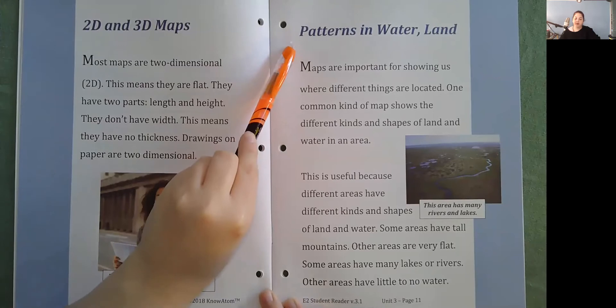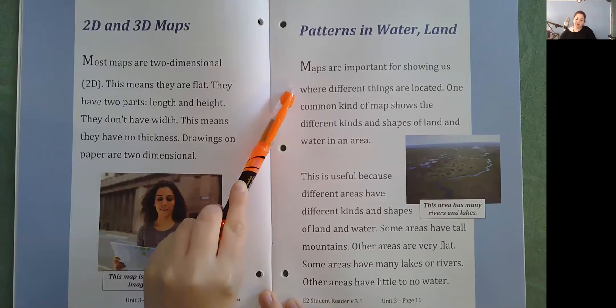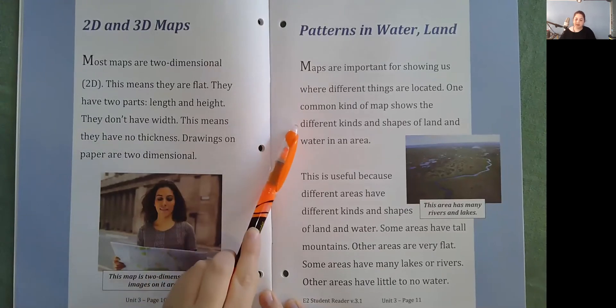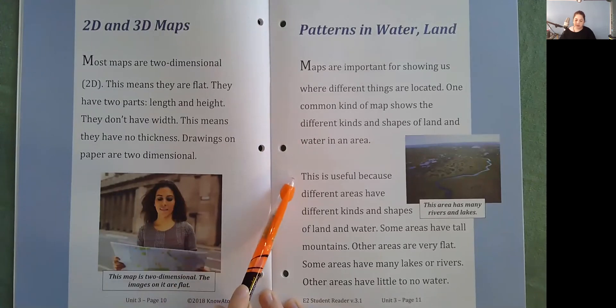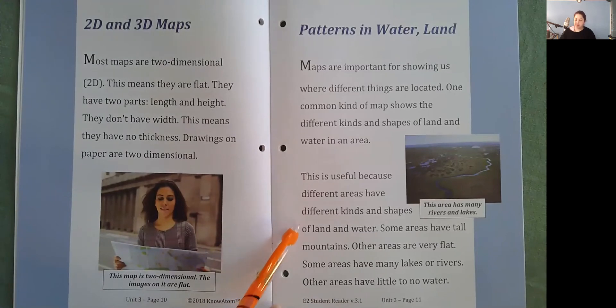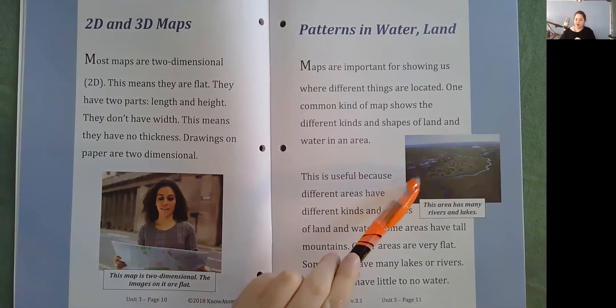Patterns in water, land. Maps are important for showing us where different things are located. One common kind of map shows the different kinds and shapes of land and water in an area. This is useful because different areas have different kinds of shapes of land and water. Some areas have tall mountains. Other areas are very flat. Some areas have many lakes or rivers. Other areas have little to no water. This area has many rivers and lakes.